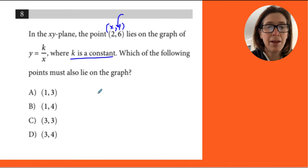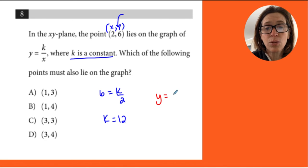So I'm going to plug my values in. So 6 equals k over 2. I'm going to multiply both sides by 2, so k is 12. That gives me an equation of y equals 12 over x.